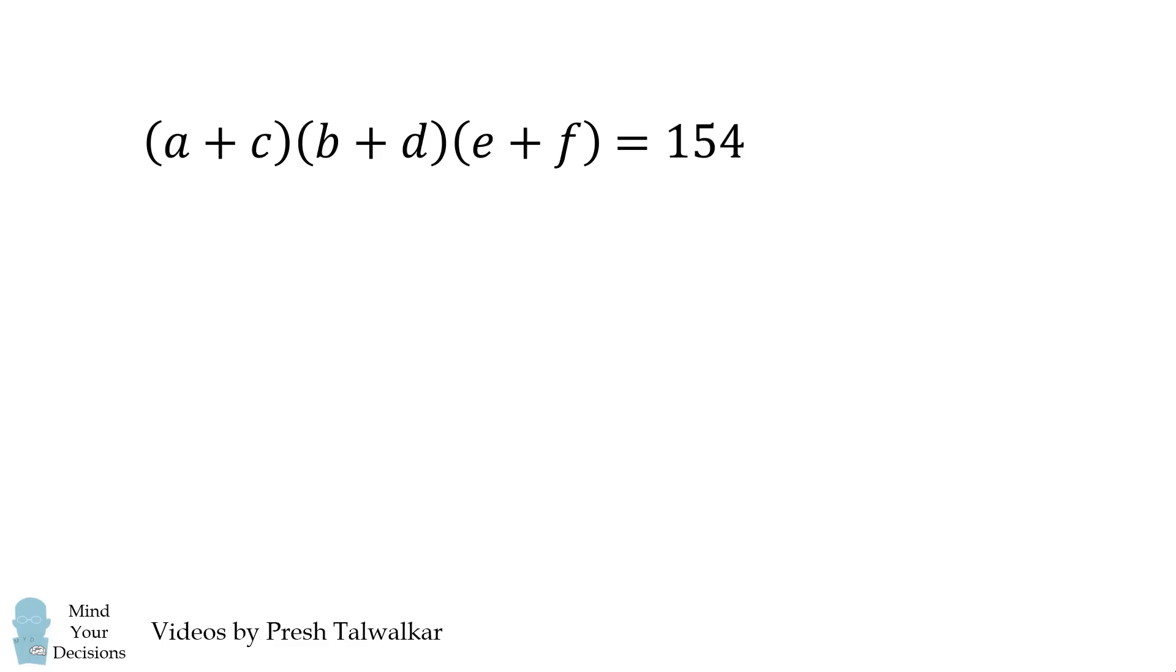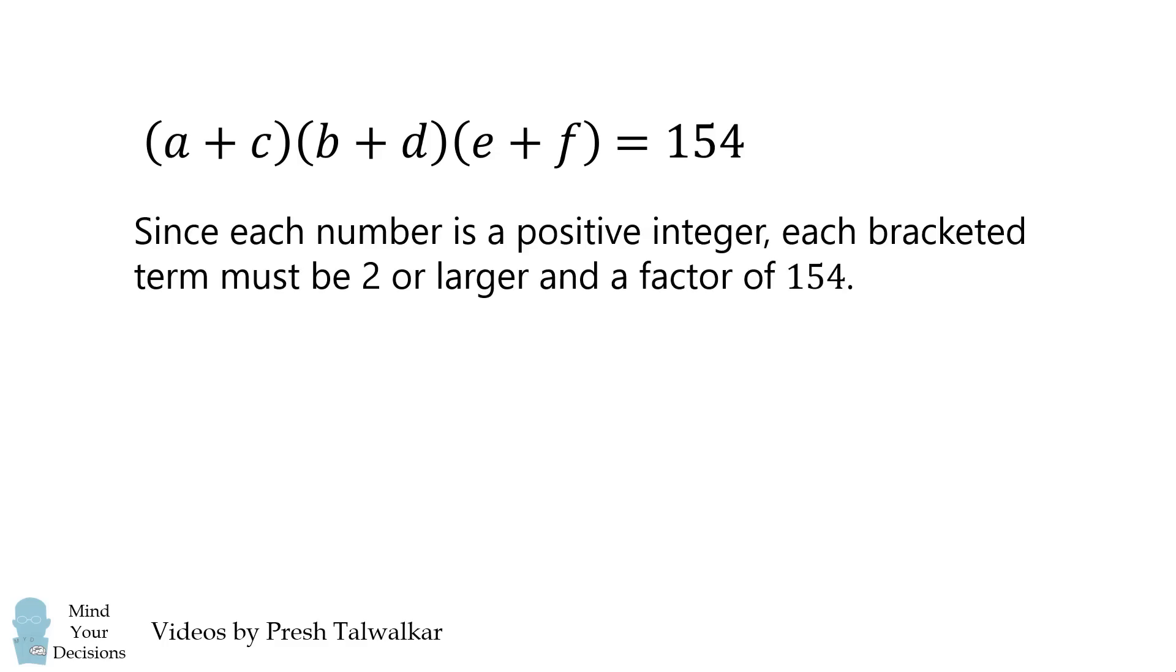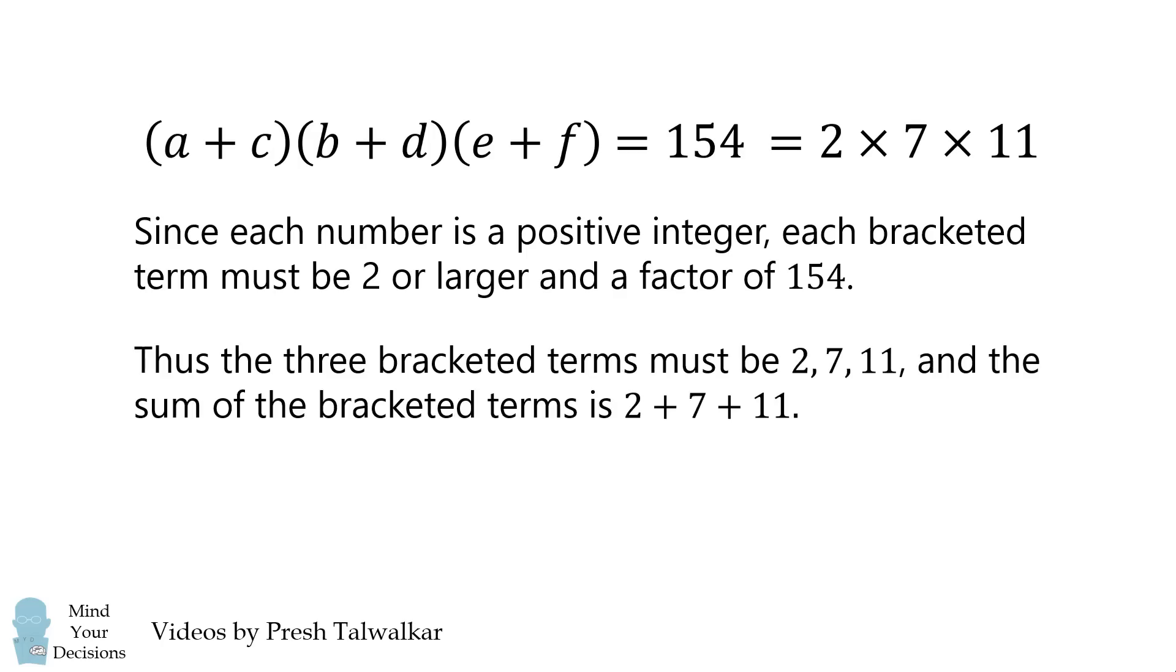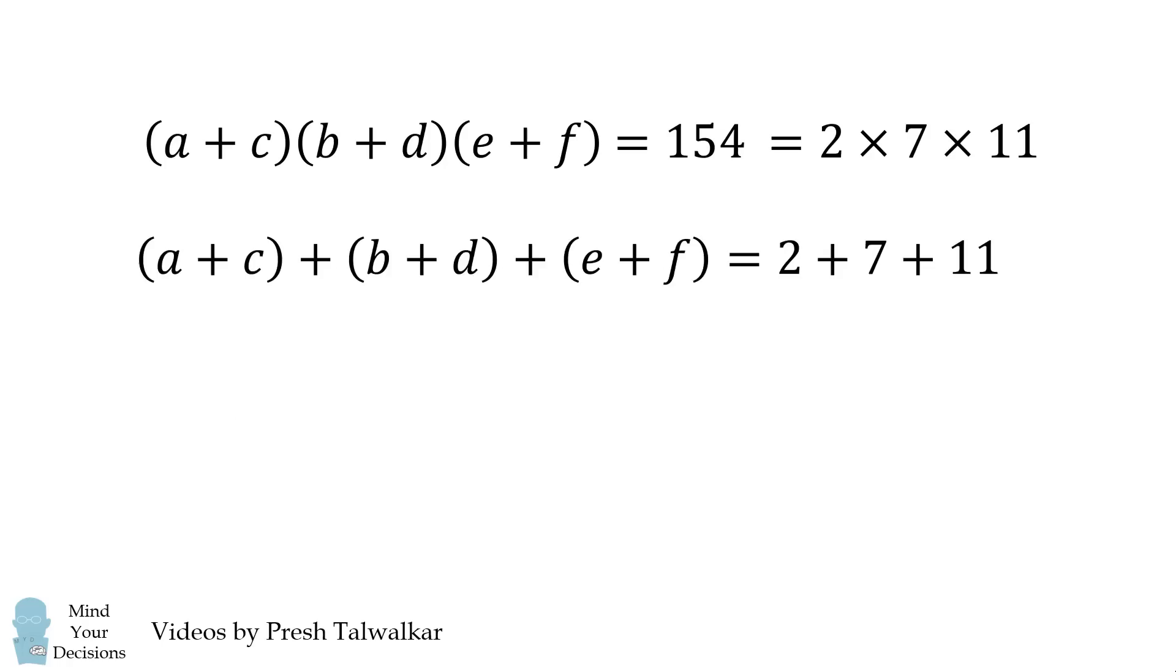Now recall, this is equal to 154. Since each number is a positive integer, each bracketed term must be 2 or larger, and must be a factor of 154. 154 factors into 2 times 7 times 11. Therefore, the three bracketed terms must be equal to 2, 7, and 11, and the sum of the bracketed terms will be the sum of 2, 7, and 11. Therefore, we have (A + C) + (B + D) + (E + F) is equal to 2 + 7 + 11.